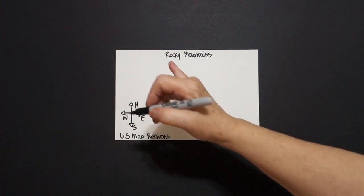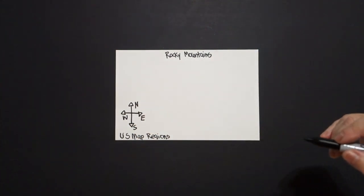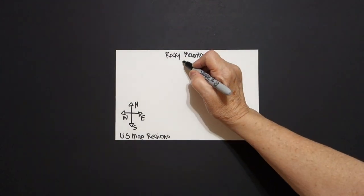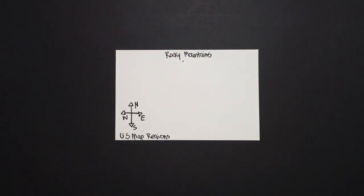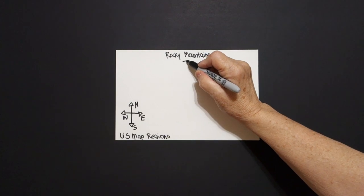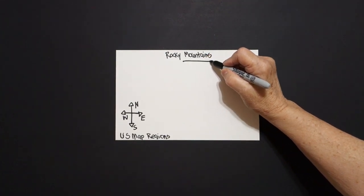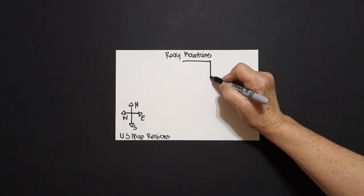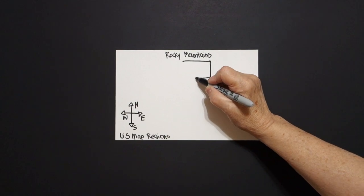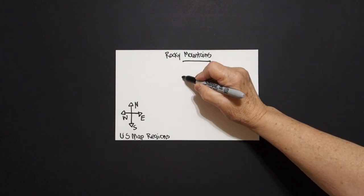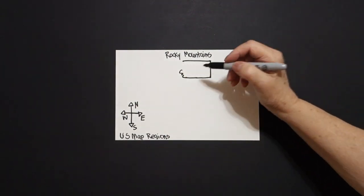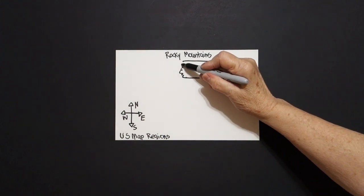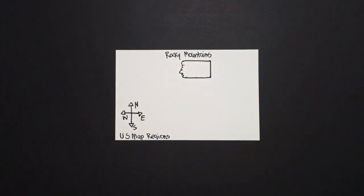Now once I've written Rocky Mountains up here, the first thing I'm going to do is put a dot right in the center. And I'm going to draw a straight line over, straight line down, straight line in, and then a wavy line up and connect.